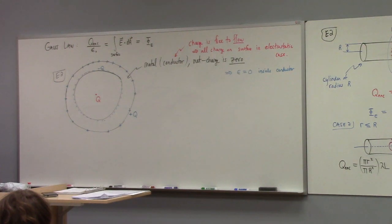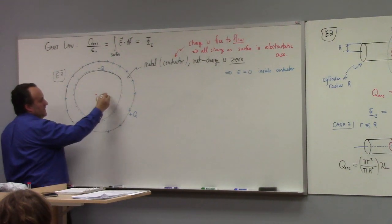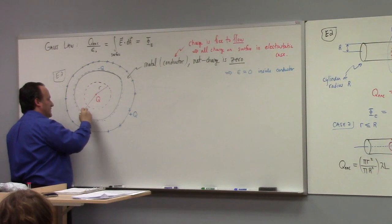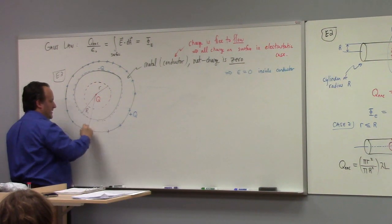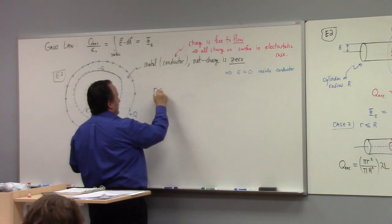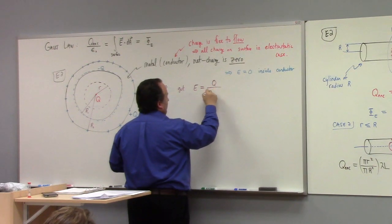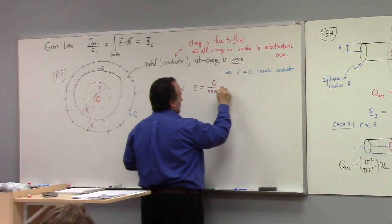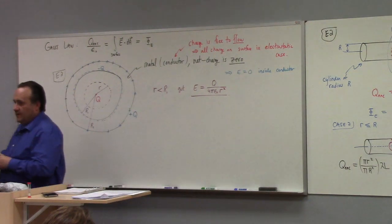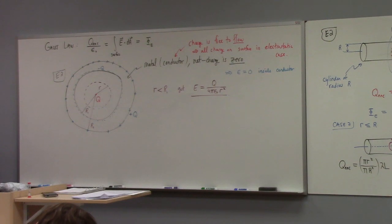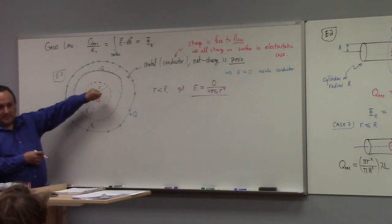Let's see how this all works with Gauss's law. Start with a Gaussian sphere inside here. We'll say the inner radius is big R1 and the outer radius is big R2. For r less than R1, we get E equals Q over 4 pi epsilon naught R squared. The electric field has to be radially outward, so E times 4 pi R squared is the flux. Divide by epsilon naught, and we get the Coulomb field.